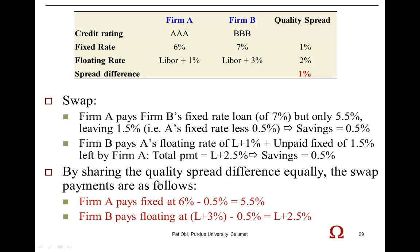By sharing the quality spread difference equally, the swap payments become exactly what we noted at the outset: Firm A paying 5.5%, which represents what it would have had to pay on a fixed rate loan minus its share of the bounty of 0.5%. And therefore, Firm B paying what it would have had to pay on a floating rate loan at LIBOR plus 3, but net of its own share of the bounty of 50 basis points, it winds up paying only LIBOR plus 2.5%.